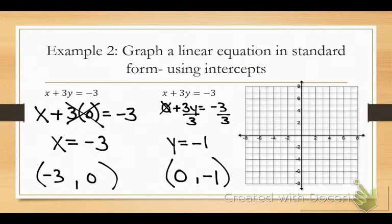Now plot the points. My first point goes at negative 3, zero — I just follow the ordered pairs. My second point goes at zero, negative 1. You can see exactly where your points are: one point is on the x-axis, the other point is on the y-axis. So you've graphed the intercepts — you know where the line crosses each axis.